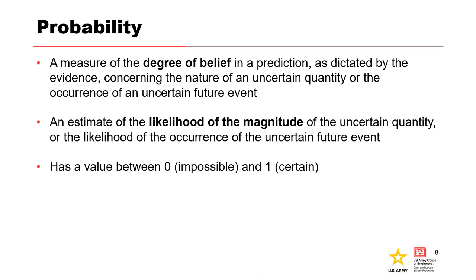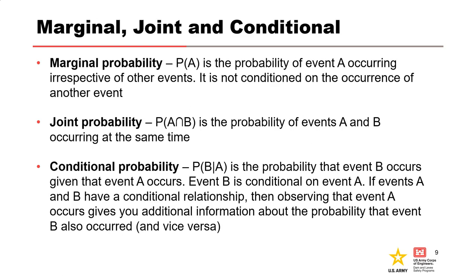Probability is a measure of the degree of belief in what we are predicting based on the information or evidence that we have. What we are predicting are uncertain events that occur in the future. Probability can also be an estimate of the likelihood of the magnitude of an uncertain quantity. A probability must have a value between 0 and 1 — no less, no more. If something has a probability of 0, it is impossible; if it has a probability of 1, it is certain to occur. A marginal probability is the probability of a single event occurring irrespective of other events — it is independent of and not conditioned on the occurrence of another event.